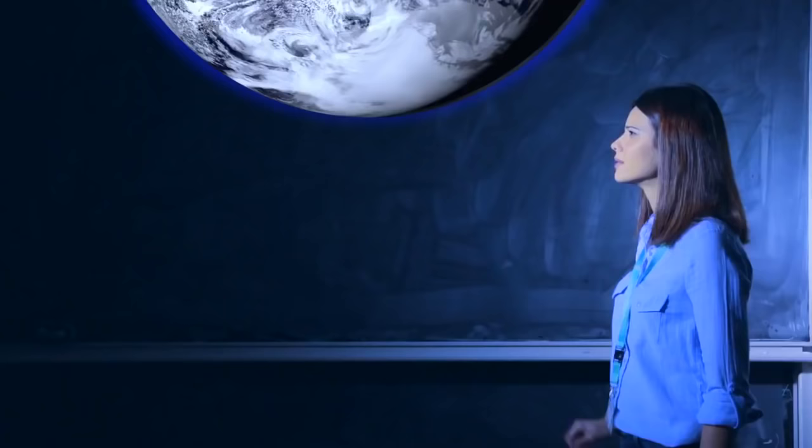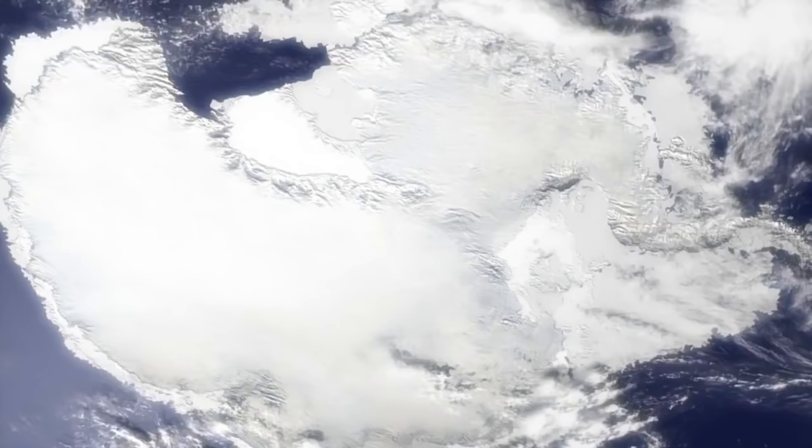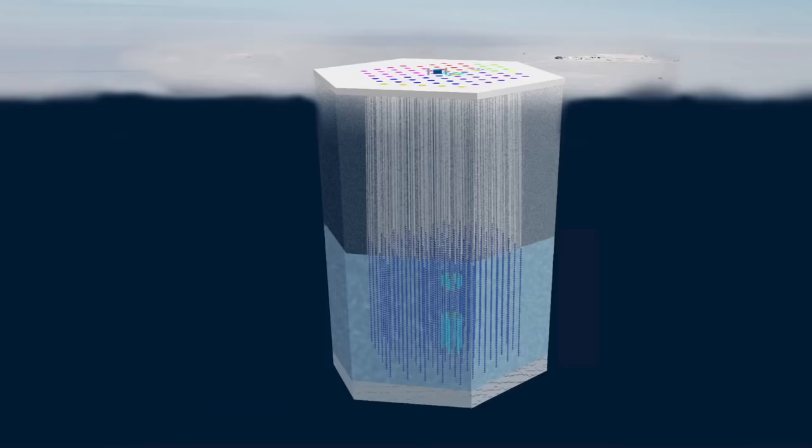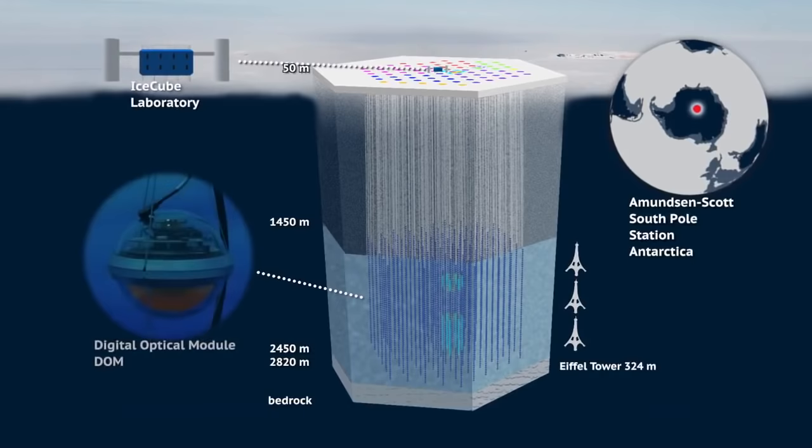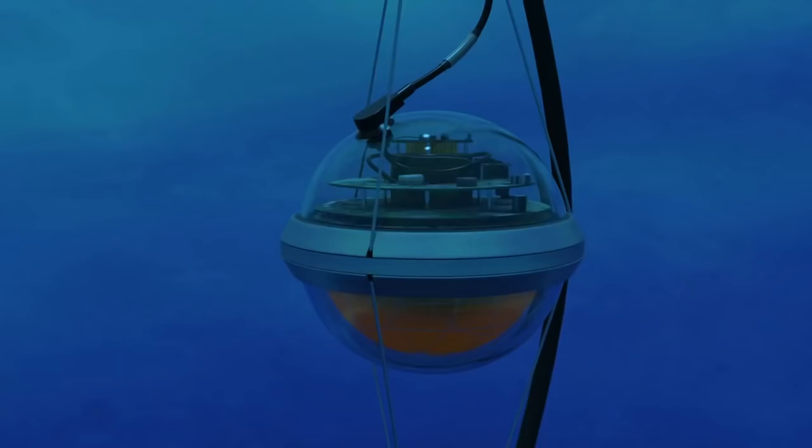What is so special about the South Pole? The South Pole ice itself is the detector. Between one and a half and two and a half kilometers below the surface, groups of light sensors are in position to see the light produced by particles passing through the ice.